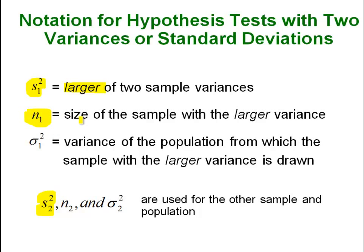N₁ is the sample size of that one group, and sigma-squared-sub-1 is the population variance corresponding to the sample with the larger of the two variances. You will have two versions of everything — s-squared, n, and sigma-squared — with sub-1's and sub-2's for the two different samples. You always let the sub-1's correspond to the group with the larger of the two variances.